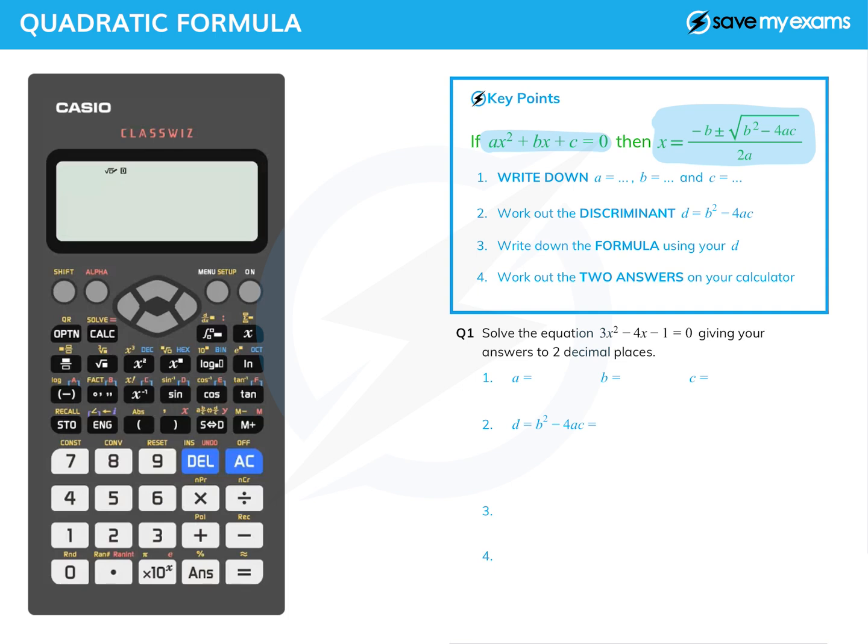a, b, and c are just numbers and you put them in the formula on the right, which is minus b plus or minus the square root of b squared minus 4ac, all over 2a. And yes, GCSE students have to remember that.